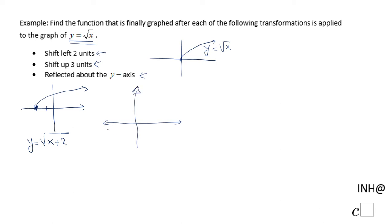So from this point we're gonna move three up - one, two, three - and this is the graph. The equation will be y equals square root of x plus two plus three. And we have to do one more, which was...